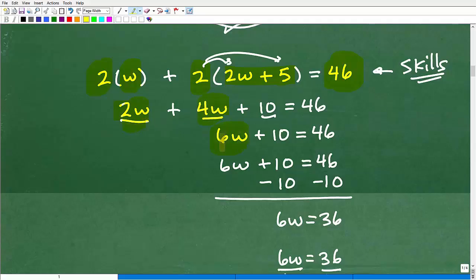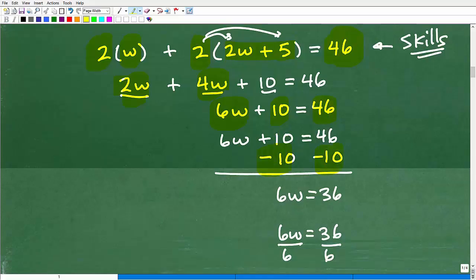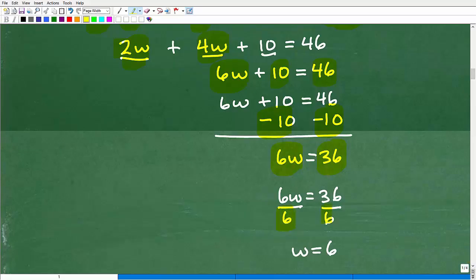Here we go. This is going to be 2w, and I'm going to use the distributive property here. 2 times 2w is 4w. I already have a 2w. And then 2 times 5 is 10. Let's add like terms. 2w and 4w gives me 6w. 6w plus 10 is equal to 46. Now I'm going to subtract 10 from both sides of the equation. Now I have 6w equals 36. Divide both sides by 6. I get w equals 6.